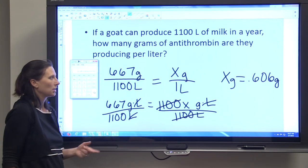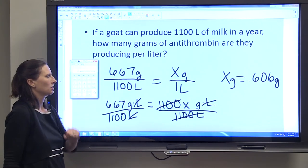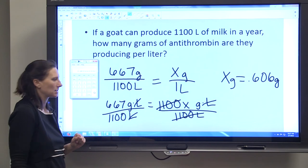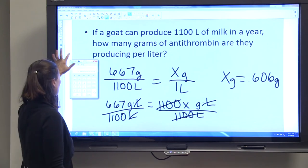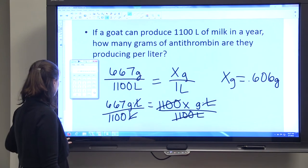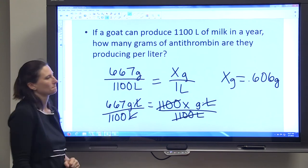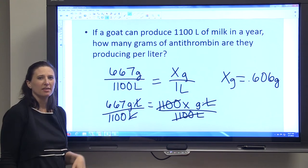So in one liter of milk, each goat is producing 0.606 grams of antithrombin.